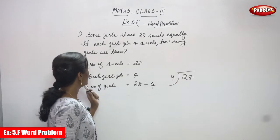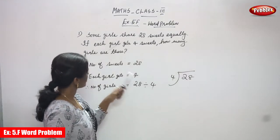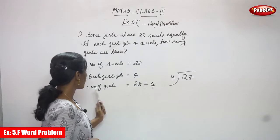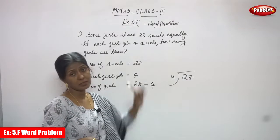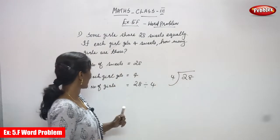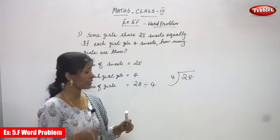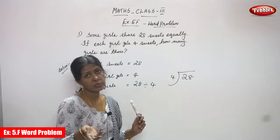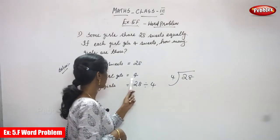The sweets are equally shared. Each girl gets four sweets, so the number of girls you have to find out. This is the question. I'll explain once again: total number of sweets is 28, and the sweets are equally shared, so each girl gets four.